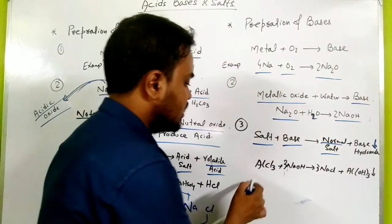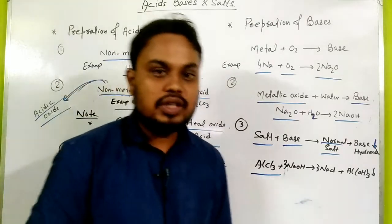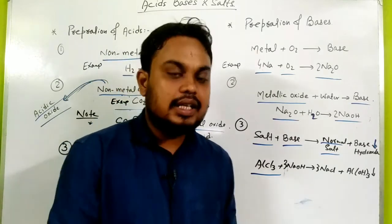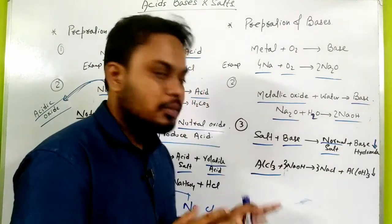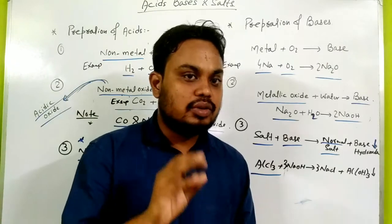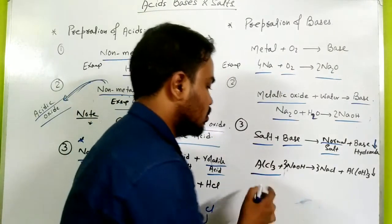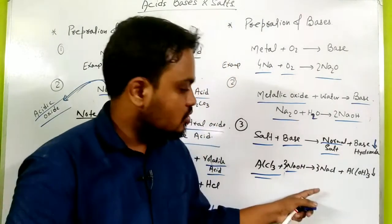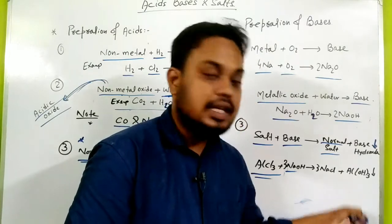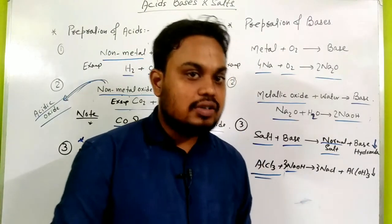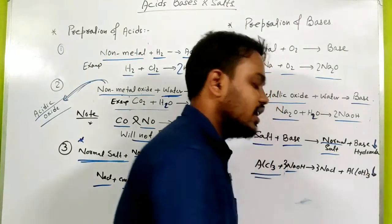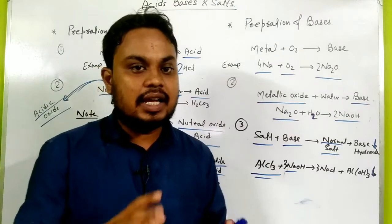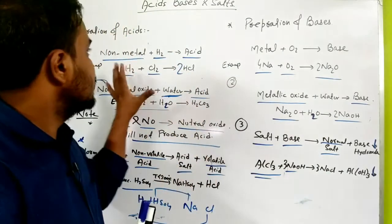For example, aluminium chloride reacts with sodium hydroxide. Aluminium chloride is a salt, and it reacts with a base. The products are a normal salt and a precipitated base hydroxide.